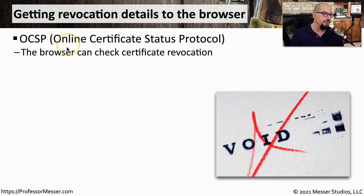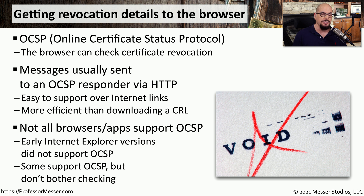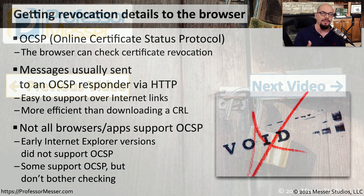A much more efficient way to do this is by using an online certificate status protocol, or OCSP. This is something built into our browser that can perform a single check just for this certificate to see if it may have been revoked. This is usually a check done from your browser to an OCSP responder managed by the certificate authority, allowing a browser to validate a single certificate rather than downloading a large file. Many browsers these days support OCSP, but you may find some older browsers or applications that do not properly perform OCSP checks, or browsers that support OCSP but don't actually check for revocation when visiting a site. For that reason, you may not want to rely on a single method for performing validation and instead use multiple methods to check on the validity of a particular certificate.